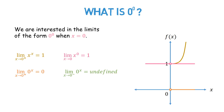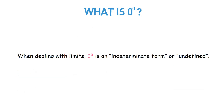But there are other limits of the same form with different values. The limit of 0 raised to x as x approaches 0 from the right is 0, and the limit of 0 raised to x as x approaches 0 from the left is undefined. The limit of x raised to 1 over the natural log of x as x approaches 0 from the right is e. So the value of limits of the form 0 raised to the power of 0 may differ with the functions involved. Therefore, when dealing with limits, 0 raised to 0 is an indeterminate form or undefined.